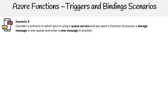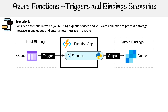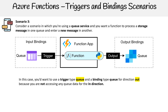Looking at a third scenario, consider a scenario in which you're using a queue service and you want a function to process a storage message in one queue and enter a new message in another. The idea is you have a queue, a function is triggering something, and it's going to output to something. Note there's a graphical error here — the icon shown should be a queue icon repeated twice, not the SendGrid logo.